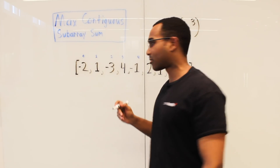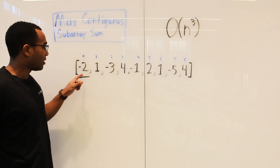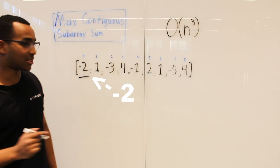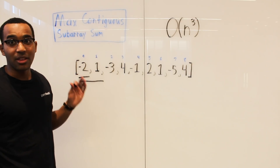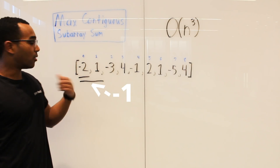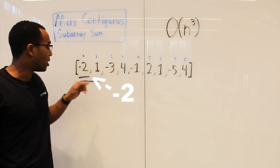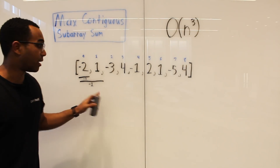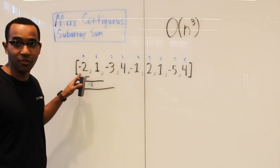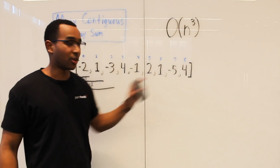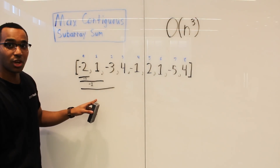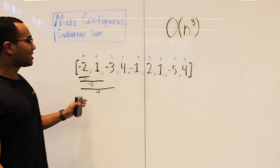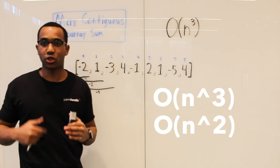We get the subarray of just negative 2 — the sum is negative 2. Then we look at the subarray of negative 2 and 1 — the sum is negative 1. That beats negative 2, so the new best subarray sum is negative 1. We take the next subarray — our left bound is still the first item — and the sum is negative 4. That does not beat the best sum of negative 1.